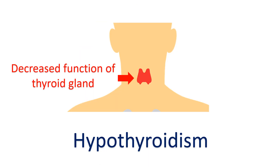Another important cause of pericardial effusion is hypothyroidism — reduced function of the thyroid gland in the neck. In hypothyroidism, fluid can also collect in other parts of the body, more commonly under the skin of the legs. Hypothyroidism is very common in the community, but pericardial effusion due to hypothyroidism is very rare because of prompt detection through readily available blood tests and treatment, so it seldom becomes severe enough to develop pericardial effusion.